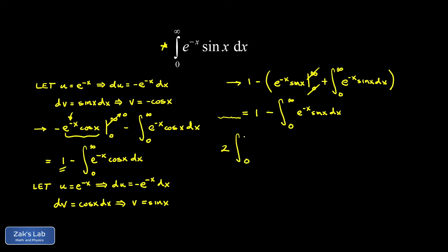So twice the integral from 0 to infinity, e to the negative x sine x dx is equal to 1. This allows us to quickly isolate our original integral and find its value. The integral from 0 to infinity of e to the negative x sine x dx is equal to 1 half. And we're done.